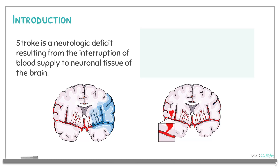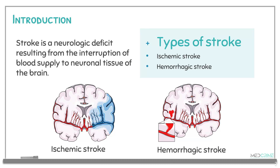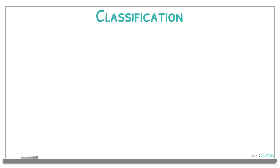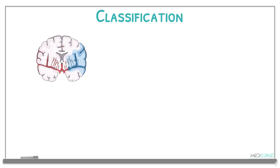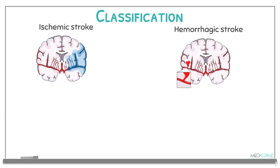We have two main types of stroke: ischemic stroke and hemorrhagic stroke. Stroke is classified into these two types — ischemic stroke and hemorrhagic stroke.